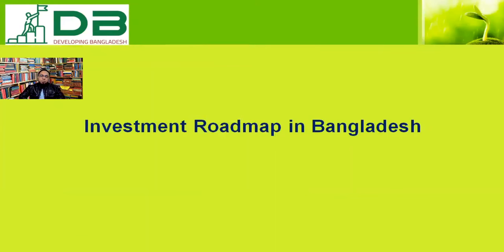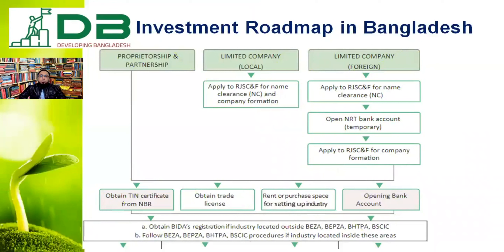Investment roadmap in Bangladesh — to become an entrepreneur in Bangladesh, you should know the roadmap and the formalities you have to go through to invest. According to Bangladesh's Board of Investment Development Authority, for a proprietorship business: get a TIN certificate from NBR, obtain a trade license from local city corporations, rent or purchase an industry space, and open a bank account. These are the initial steps for obtaining BIDA registration, located in BEZA, BEPZA, or Bangabandhu Hi-Tech Park Authority or BISIG Industrial Park, to start your business.